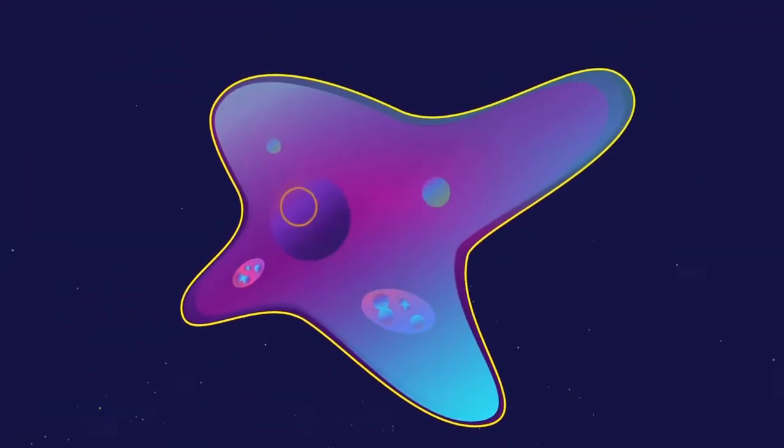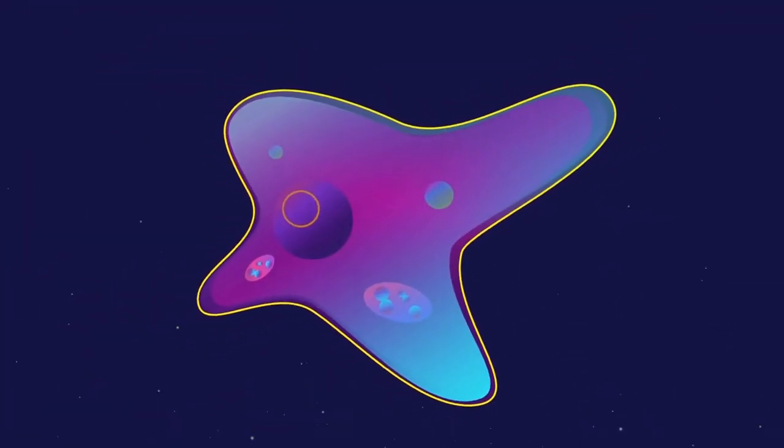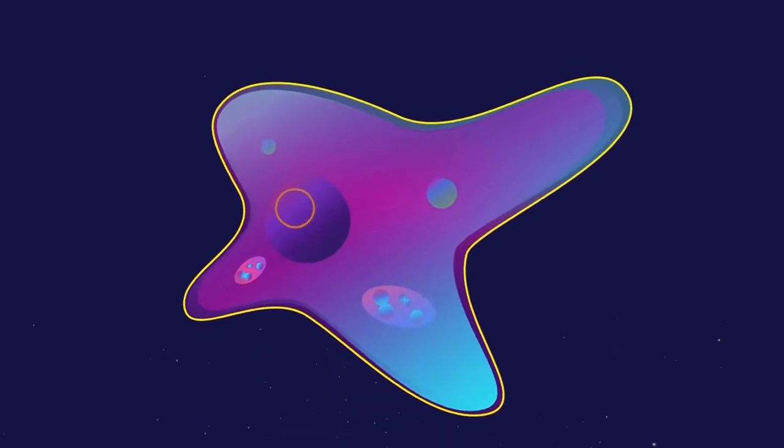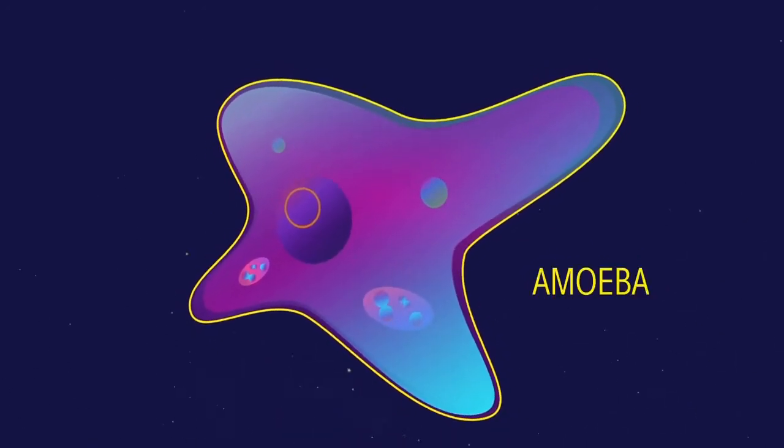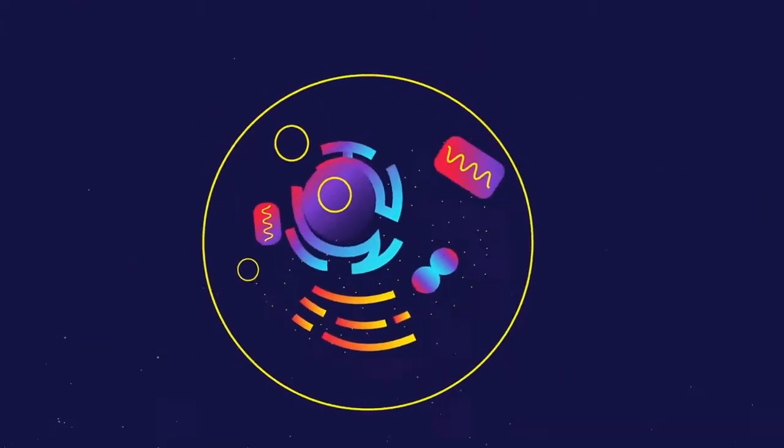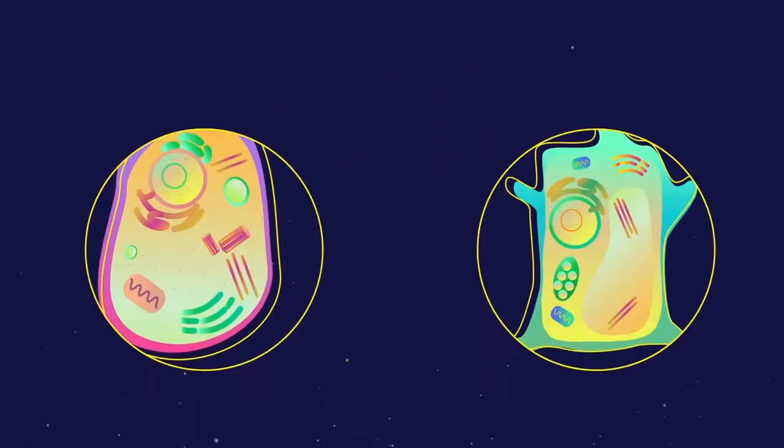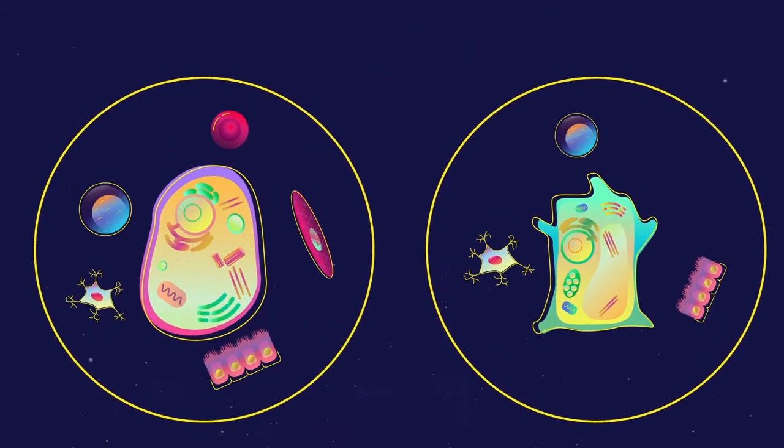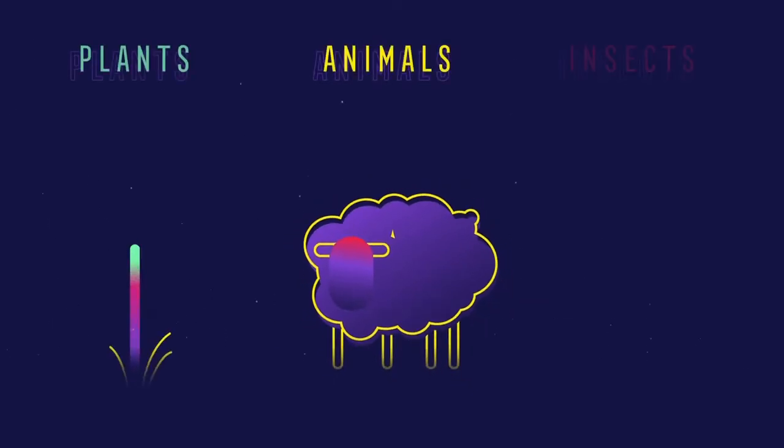Sometimes cells can exist on their own, such as a simple bacterium or a single-celled organism called an amoeba. But mostly, cells work together to form more complex multicellular organisms, such as animals, plants and insects.